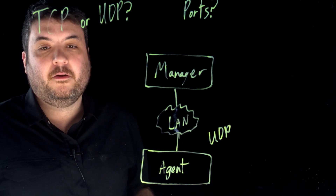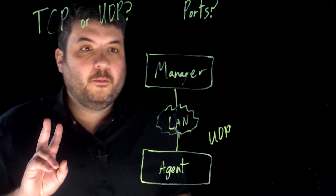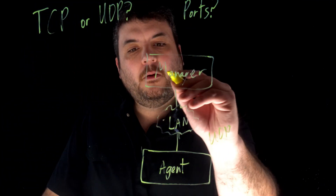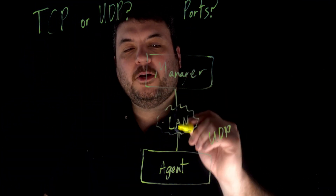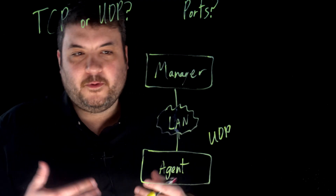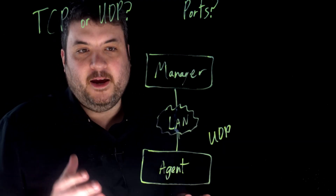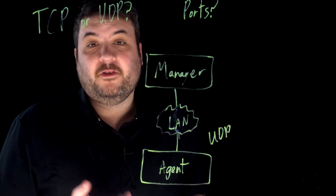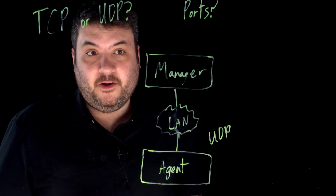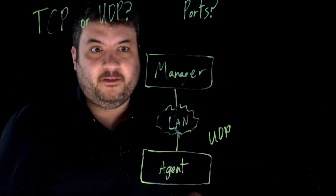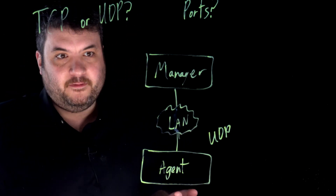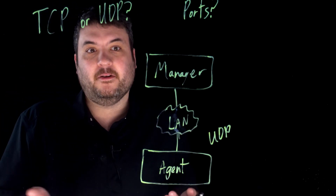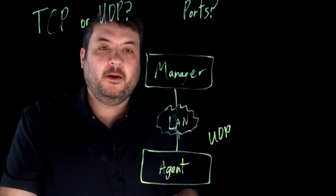Now, ports. There are actually two ports that are involved here. When we usually think about when we first learn SNMP, agents sending messages up is the primary function, and managers sending messages down tends to feel like the other thing — the secondary, the less common thing.